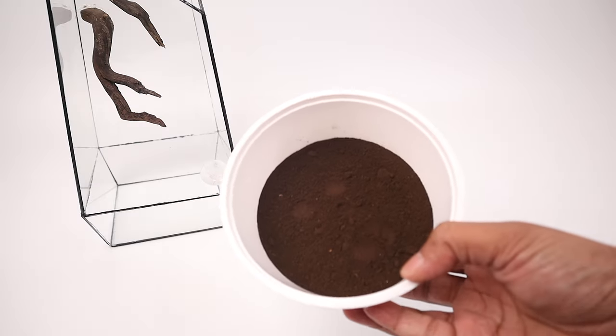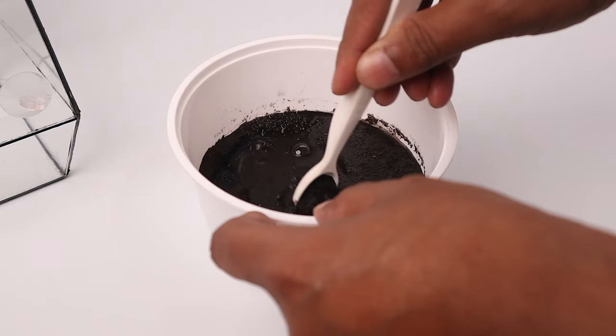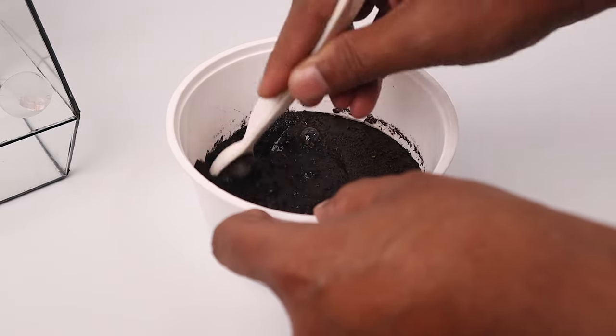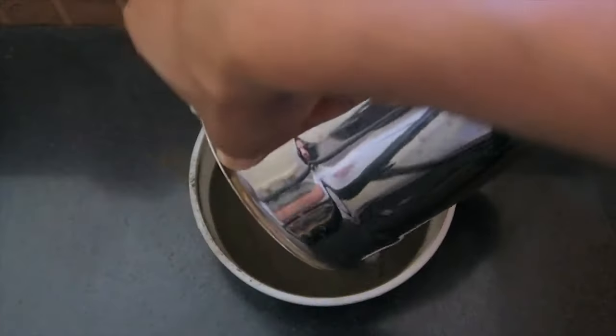Time now to prepare the substrate. I am planning a moss wall for the back. For that I will use this aqua soil powder which I mix with water to make a dough. You can grind aqua soil pellets in a grinder to make the powder.